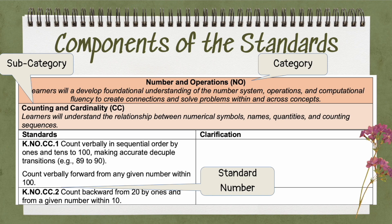The first letter K represents kindergarten, dot NO for number and operations, dot CC for the subcategory of counting and cardinality, and then dot one for the first standard in that list.